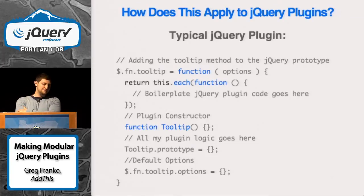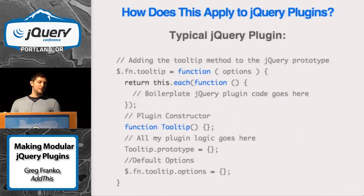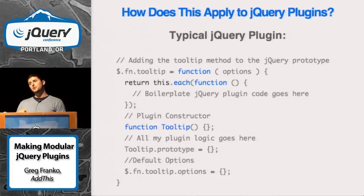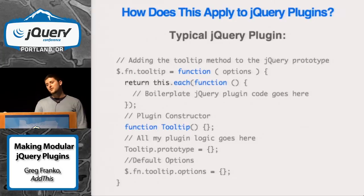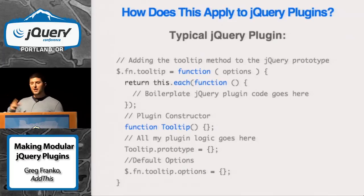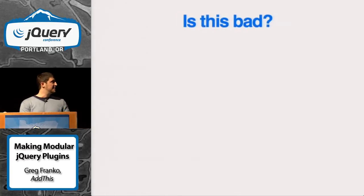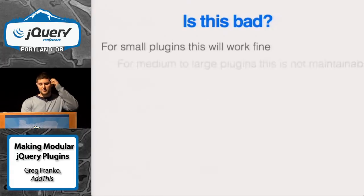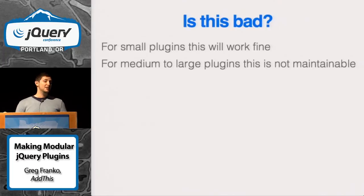How does this apply to jQuery plugins? We can definitely structure our plugins better. The obvious example is you attach a name to the jQuery prototype, use return this.each for correct context, and have a general function constructor with a prototype handling all your methods. Internally you instantiate your object, store it in the jQuery data method, and people can access your API methods. This is fine for small plugins, but for anything medium to large it becomes unmaintainable very quickly.